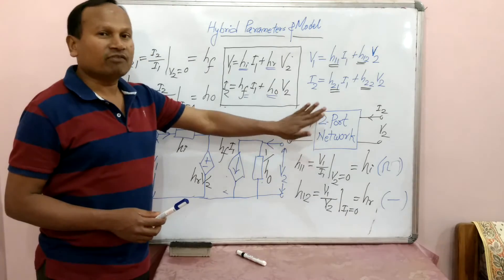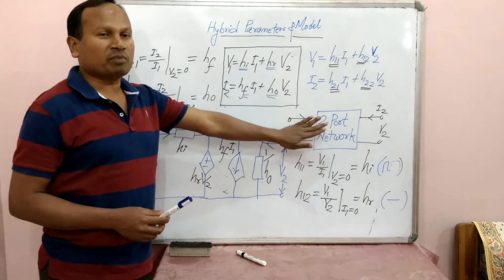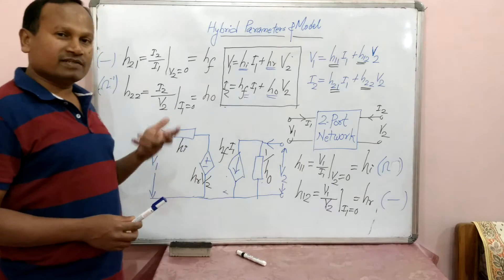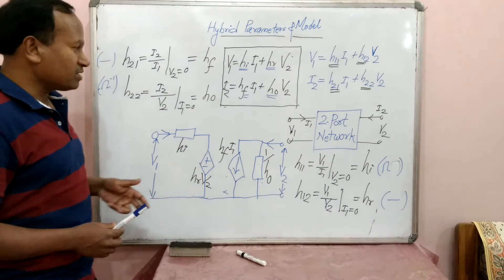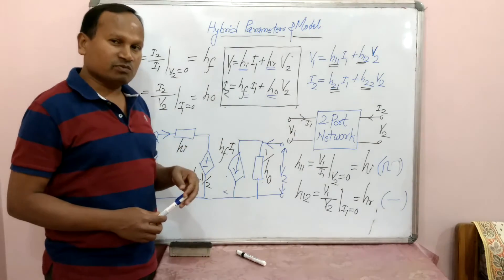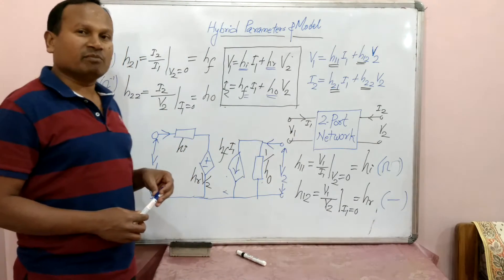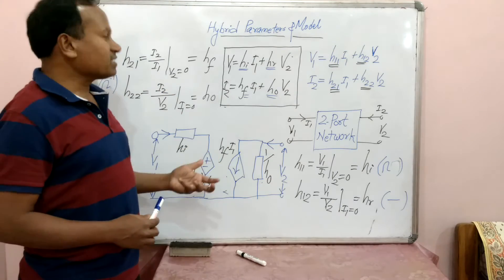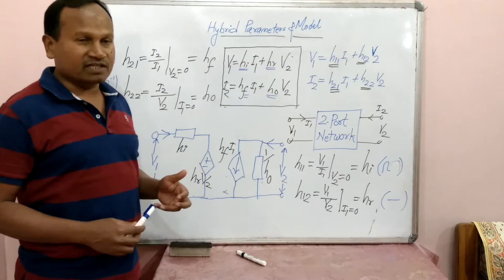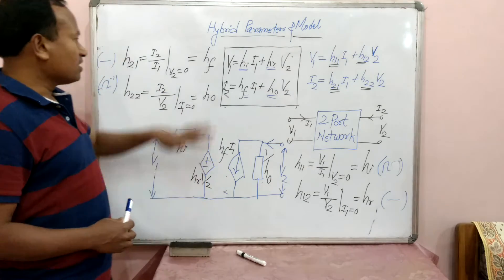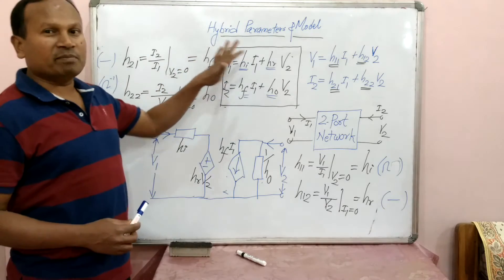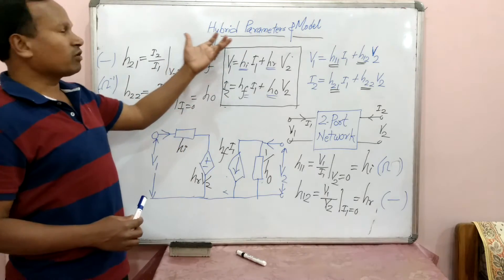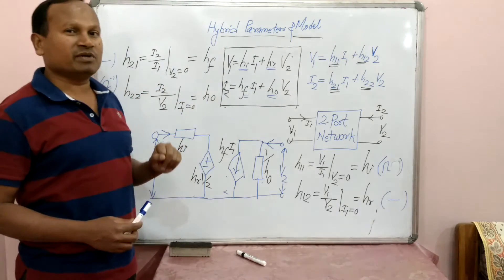There are four standard types of two-port parameters. First is Z parameters, called impedance parameters. Second is Y parameters, called admittance parameters. Third is H parameters and fourth is ABCD parameters. Today we are discussing hybrid parameters, which are also called H parameters.